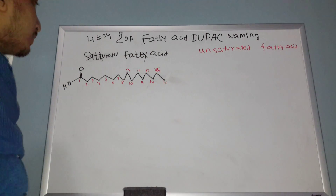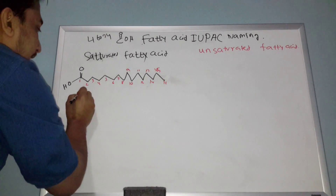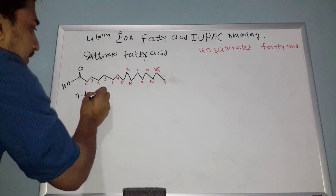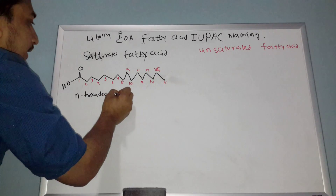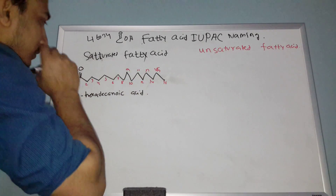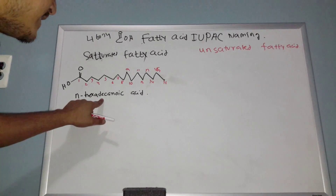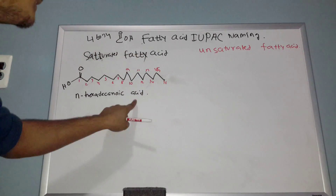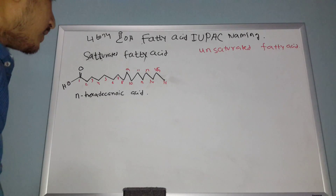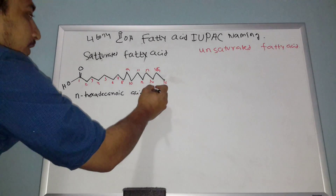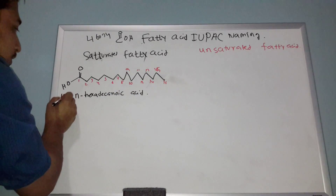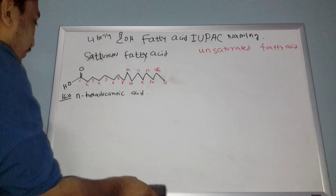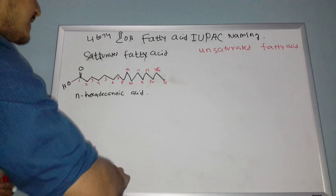There are 16 carbons. The IUPAC name is based on the number of carbons: 16 means hexadecanoic acid. 'Hexadec' means 16, and 'noic acid' refers to the carboxylic acid group — the C double bond O with OH. The IUPAC name of this one is hexadecanoic acid. You can also write the skeletal name as 16:0 — that zero means there is no double bond present.